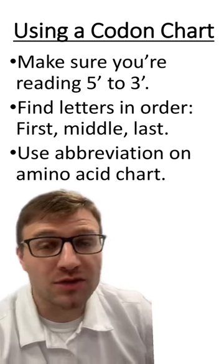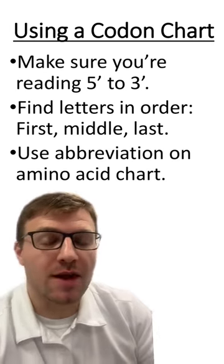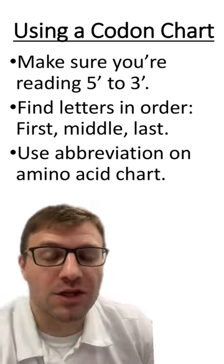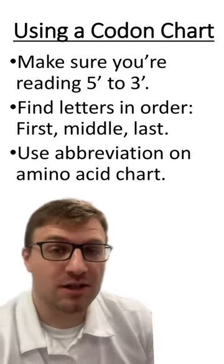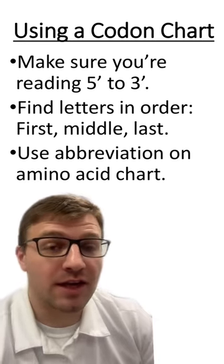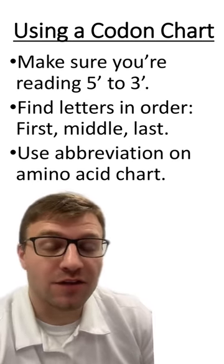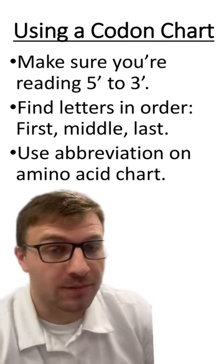When using a codon chart, you have to make sure you're reading the mRNA sequence from 5' to 3'. You're going to use the letters in order of first, middle, last. And you'll use the abbreviation on the amino acid chart to figure out which amino acid your codon codes for.